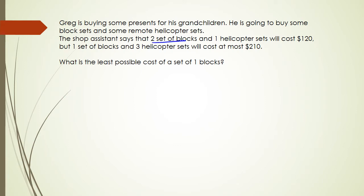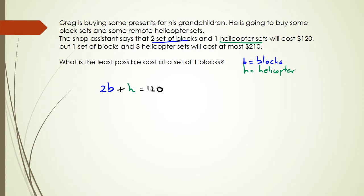We've got two sets of blocks and one helicopter set, and that's going to cost $120. I'm going to put B as blocks and H as helicopter set. So in the first equation we have 2B plus 1H equal to $120, and in the second equation we have one set of blocks, 1B, plus three sets of helicopters, 3H, which will cost at most $210.